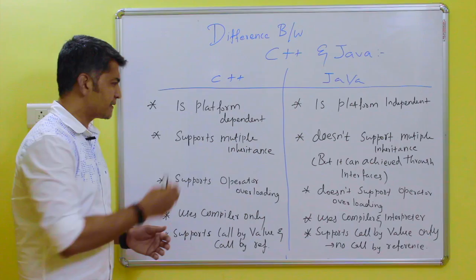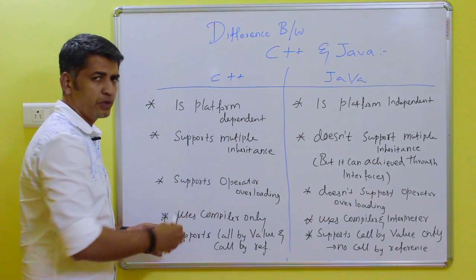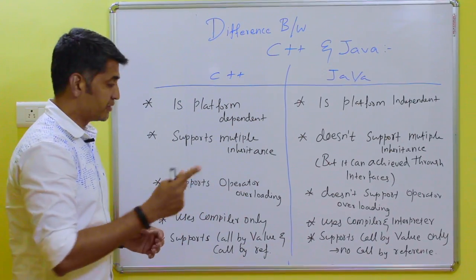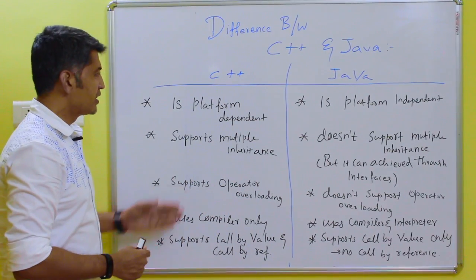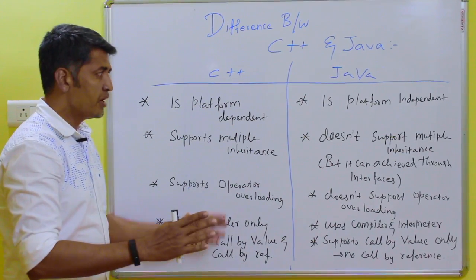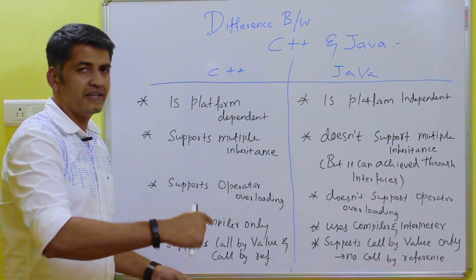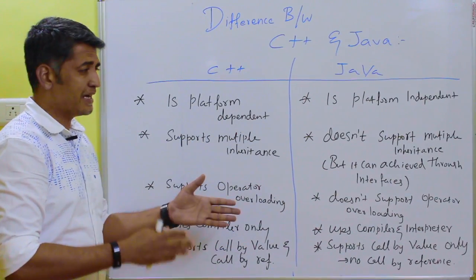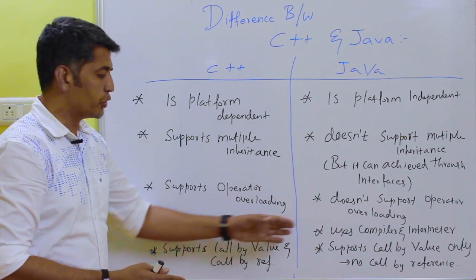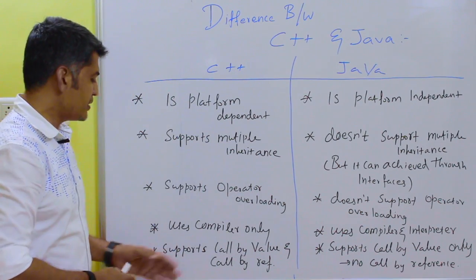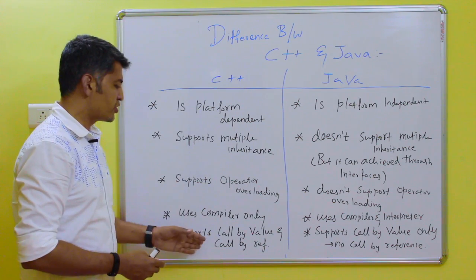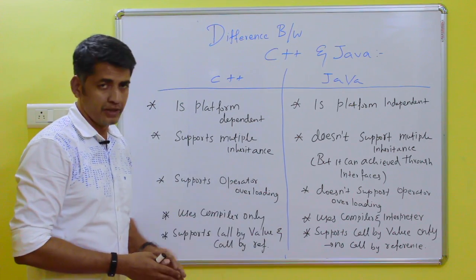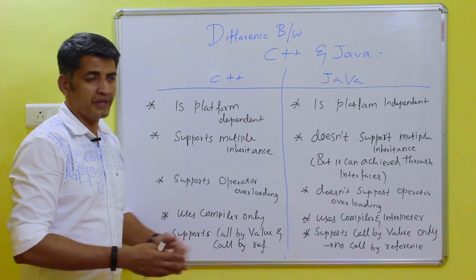C++ supports operator overloading but Java does not support operator overloading. C++ uses a compiler only, but Java uses both a compiler and an interpreter because it uses JRE and JVM. Also, C++ supports both call by value and call by reference, but Java only supports call by value and does not support call by reference.